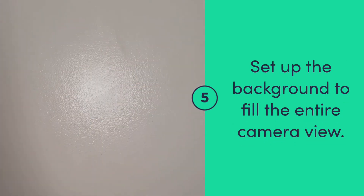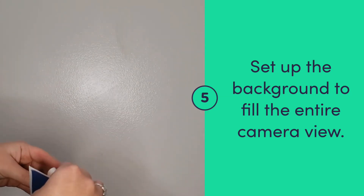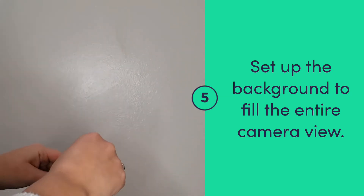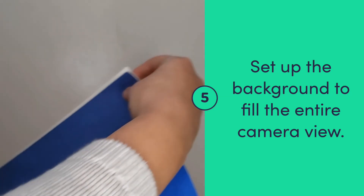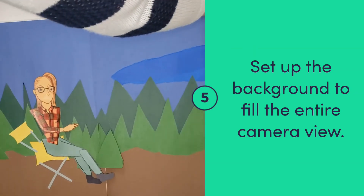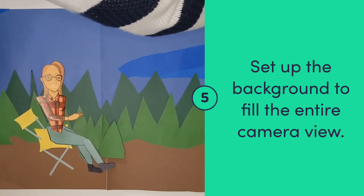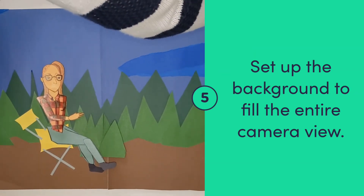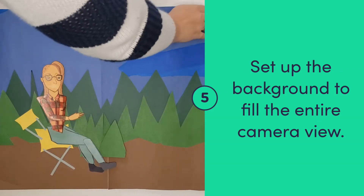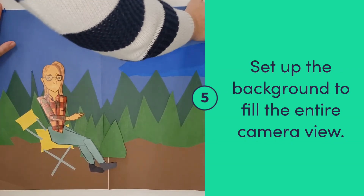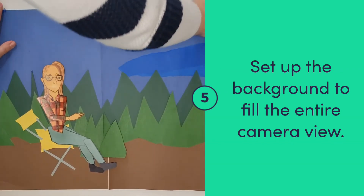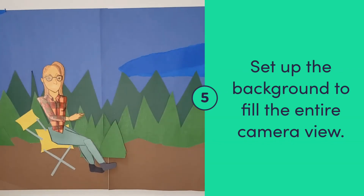Next, you'll need to set up your animation space. You can attach your background to a wall or to your refrigerator. For your camera, set it up on a tripod or lean it against an object. Point your camera towards the background and make sure that the background fills the entire space that the camera is able to view.